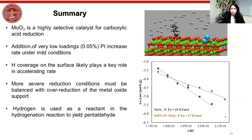In summary: molybdenum oxide is very selective for the conversion of carboxylic acid; addition of 0.05% platinum can increase the rate under mild conditions; hydrogen coverage on the surface plays a big role in accelerating the rates; and hydrogen is used as a reactant in the hydrogenation reaction to yield pentanal. Thank you for your time and attention — I will be happy to answer any questions.